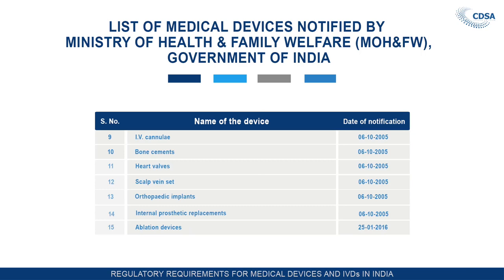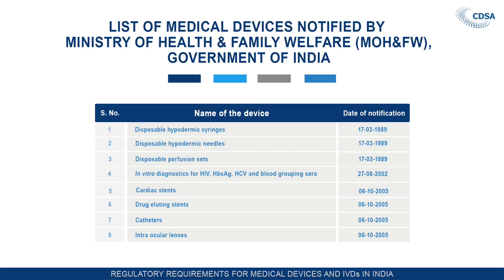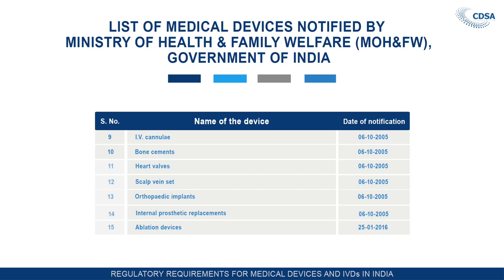In 2005, the Ministry of Health and Family Welfare notified 10 additional medical devices under Section 3(b)(4): cardiac stent, drug-eluting stent, catheters, intraocular lenses, IV cannula, bone cement, heart valves, skull prostheses, orthopedic implants, and internal prosthetic replacements. In 2006, ablation medical devices were notified. As of that point, a total of 15 categories of medical devices had been notified under the Drugs and Cosmetics Act and were under regulation.